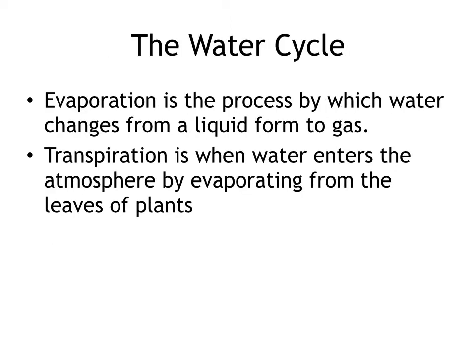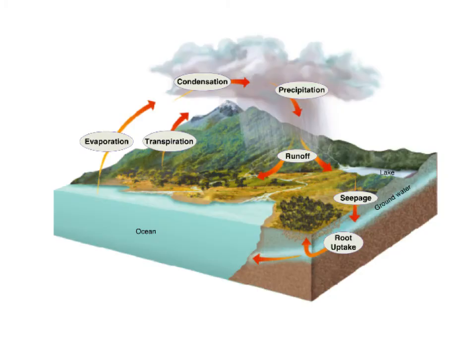The first cycle we're going to talk about is the water cycle. Evaporation is the process by which water changes from a liquid to a gas. Transpiration is when water enters the atmosphere by evaporating from the leaves of plants. Looking at the diagram, we have evaporation from the ocean and transpiration from plants. It then goes up into the clouds, condenses, precipitates, runs off, seeps into the groundwater, and roots uptake the water — then reentering the cycle through evaporation and transpiration.